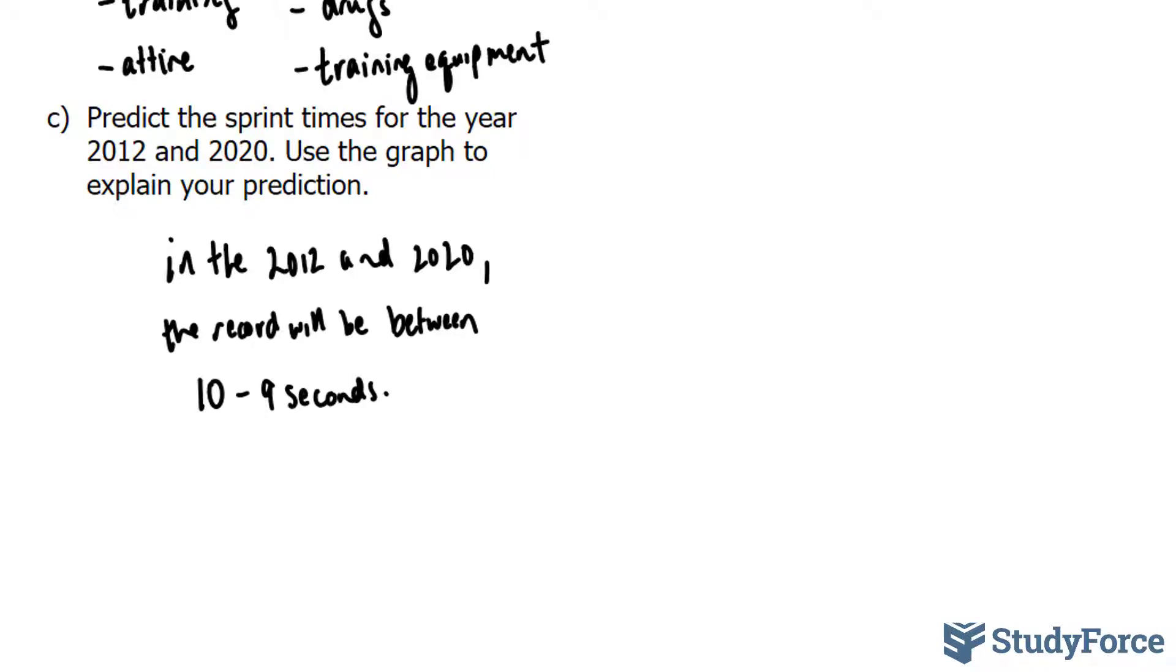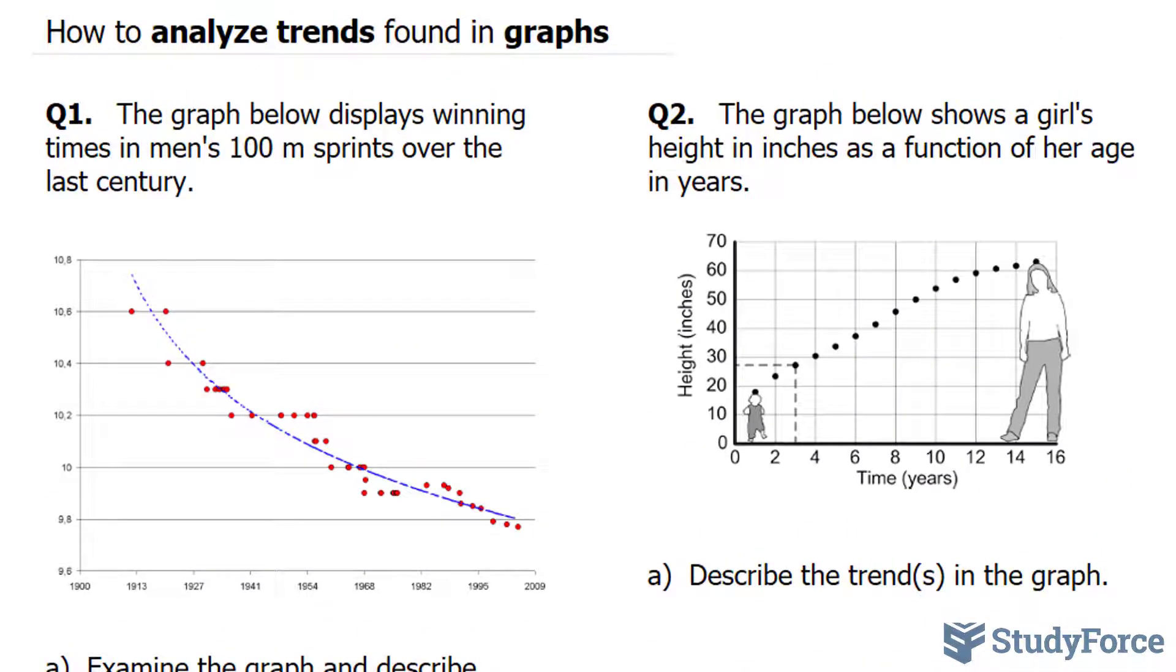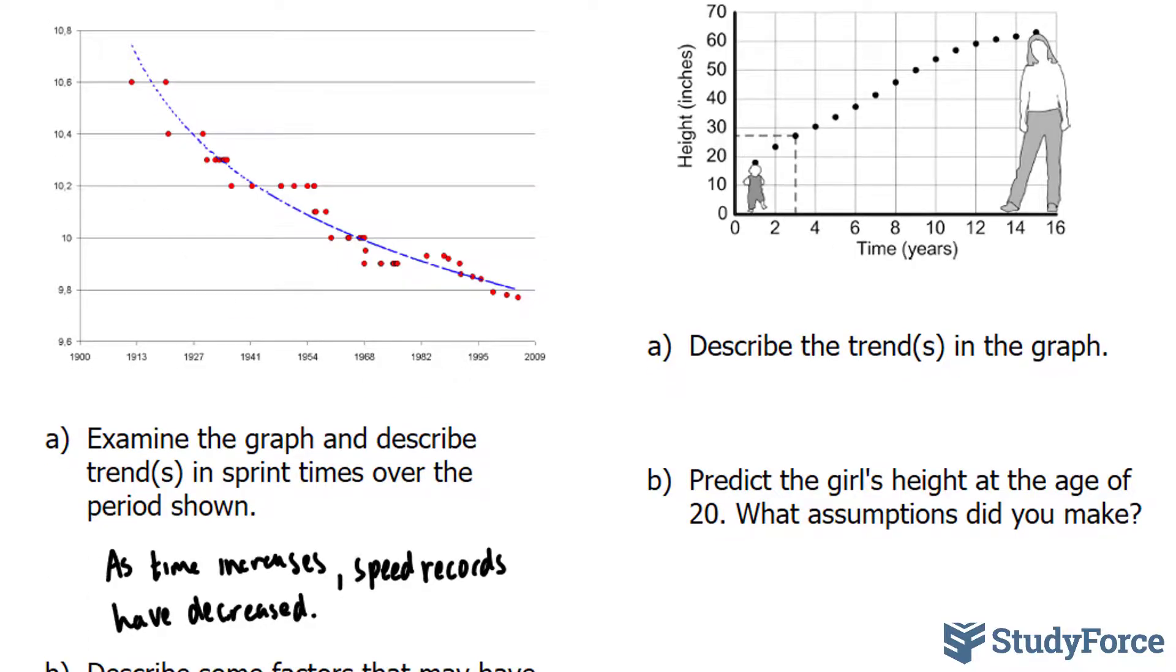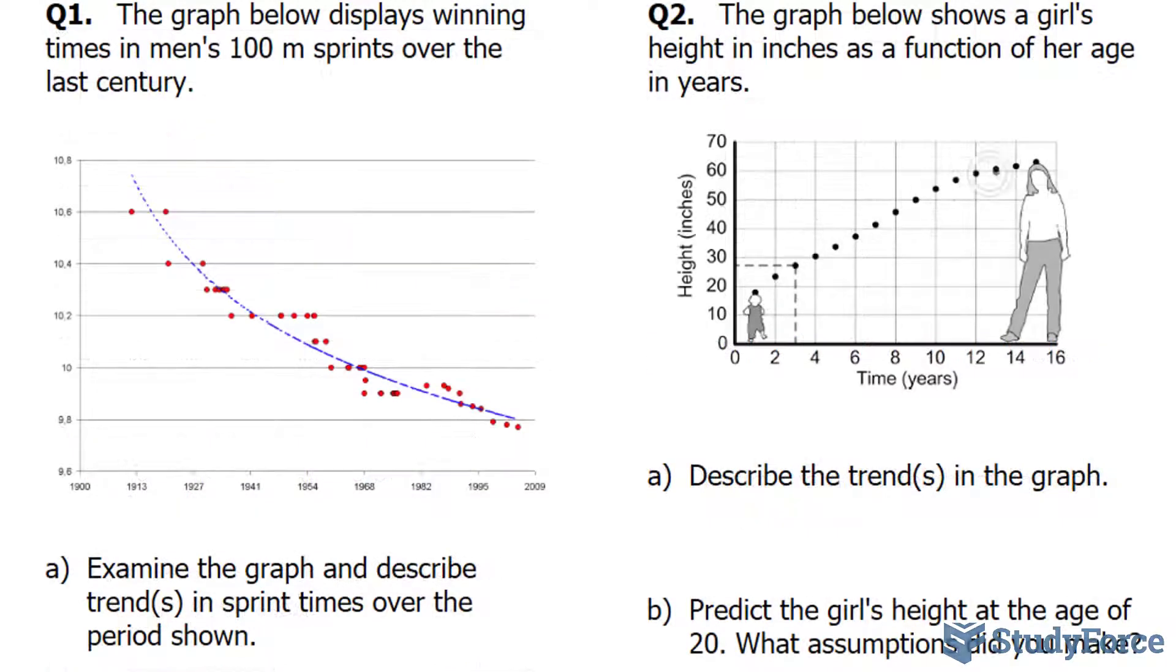Let's move on to question two. In question two, they ask, the graph below shows a girl's height in inches as a function of her age in years. Describe the trend in the graph. As you age, you will get taller up until a point where you stop growing. So we can summarize this by saying, as time increases, height increases.